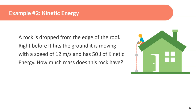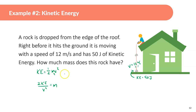Math example: A rock dropped from a roof is moving at 12 m/s just before hitting the ground and has 50 joules of KE. To find the mass: m = 2 × KE ÷ v² = (2 × 50) ÷ (12²) = 100 ÷ 144 ≈ 0.69 kilograms.